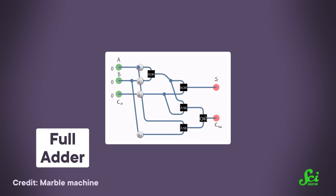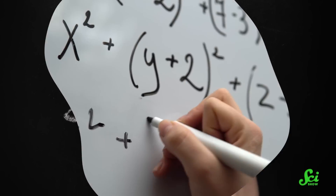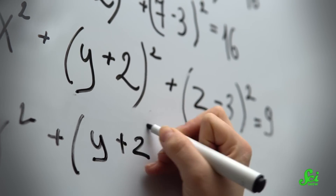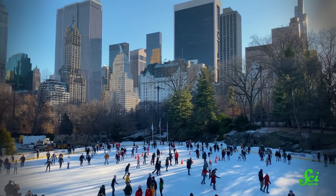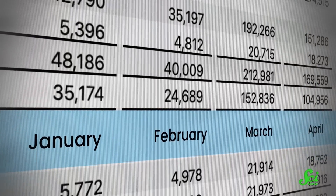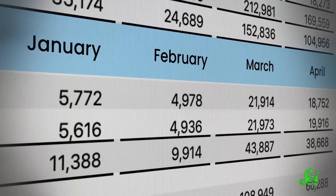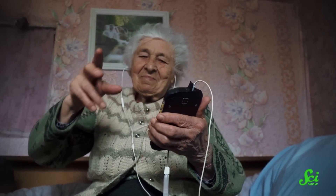For example, an AND gate asks: are both my first and second inputs ones? If so, it outputs a one; if not, a zero. So ones are basically stand-ins for true and zeros for false. The magic happens by taking the outputs of logic gates and feeding them as inputs into other logic gates. You can create a circuit called an adder that adds two binary numbers together, and by combining adder circuits you can handle larger and larger numbers. Logic gates can perform all your favorite grade school math — and maybe your less favorite high school math — with airtight accuracy.